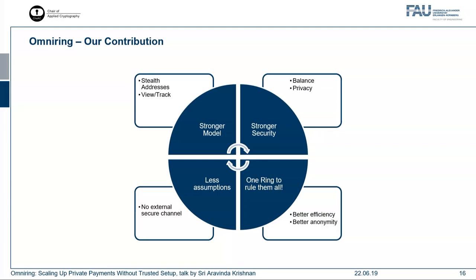To summarize our contributions: we give a strong model that captures stealth addresses and thereby receiver anonymity. We also capture the viewability and trackability feature prevalent in Monero today. We provide strong security guarantees for balance and privacy as a comprehensive privacy guarantee. We introduce what we call 'one ring to rule them all' for better efficiency and anonymity. We have fewer assumptions — we do not rely on any external secure channel between users; we do everything on the ledger.